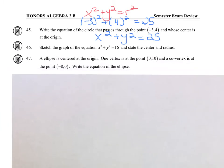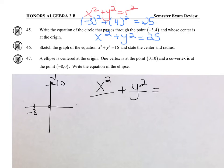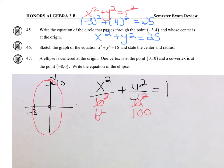For problem 47, write the equation of the ellipse. It helps to draw a picture. The center is at the origin. One vertex is at (0, 10) and the co-vertex is at negative 8. Because it's an ellipse: X squared over something plus Y squared over something equals 1. Because the vertex is in the vertical direction, A squared is under the Y and B squared is under the X. A is 10, so the denominator under Y is 100, and the denominator under X is 8 squared, which is 64.